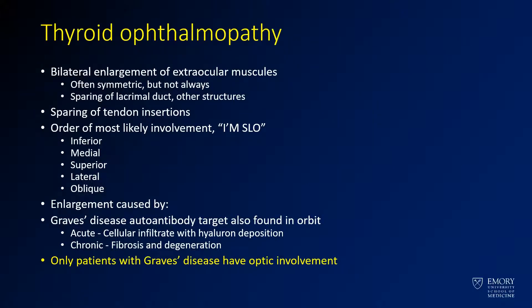So this is a case of thyroid ophthalmopathy, which is seen in Graves' disease. In this case, you have bilateral, often symmetric enlargement of extraocular muscles. Usually there won't be involvement of other structures, such as the lacrimal duct or optic nerves. They also tend to spare the tendon insertion, up near the globe itself.